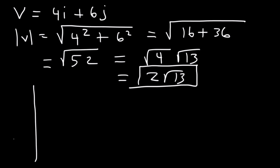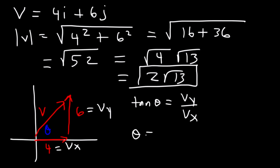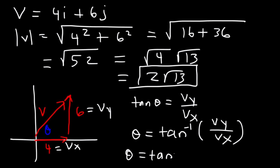To find the angle, assume the initial point is the origin. We travel 4 units to the right and 6 units up, so vector V is directed toward quadrant 1. Based on SOH-CAH-TOA, tangent theta equals the y component divided by the x component. So theta equals the arctangent of 6 divided by 4. With your calculator in degree mode, this gives an angle of 56.3 degrees above the positive x-axis.